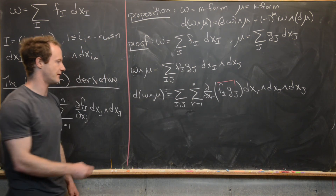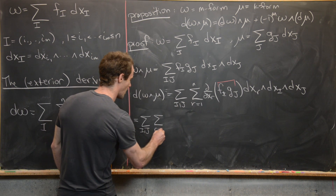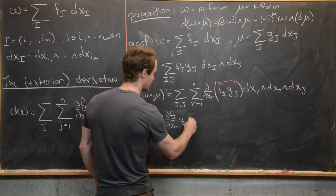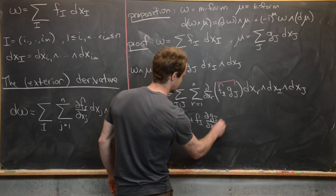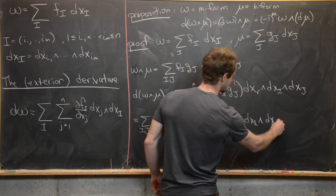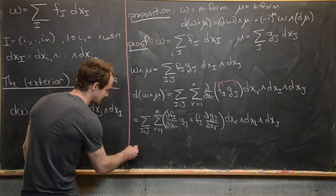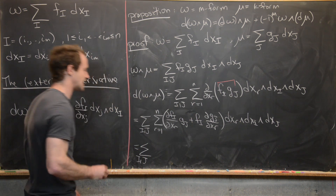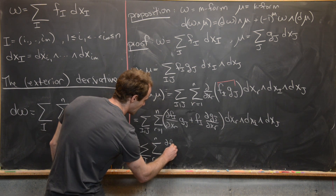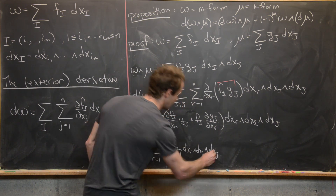Applying the product rule to the partial of f_i g_j gives the sum over i and j, and over r from 1 to n, of [(∂f_i/∂x_r) g_j + f_i (∂g_j/∂x_r)] times dx_r wedge dx_i wedge dx_j. Splitting this into two sums, the first term gives the sum over i and j of the sum over r of (∂f_i/∂x_r) g_j dx_r wedge dx_i wedge dx_j.